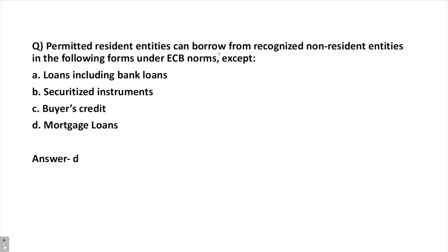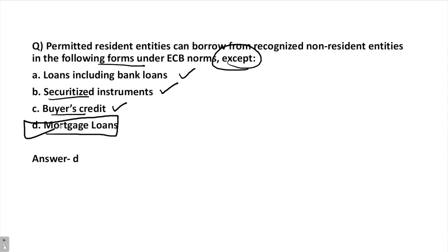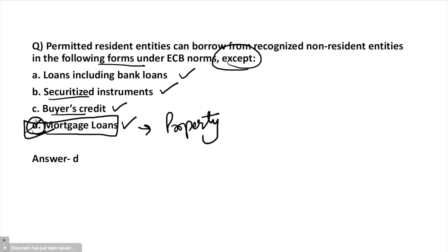Next question: Permitted resident entities can now borrow from recognized non-resident entities in the following forms, except — You can borrow as a loan, through securitized instruments, or through buyer's credit. Can you borrow through mortgage loans? Mortgage loans involve putting up land, a house, or property as collateral to borrow from an external entity. This is not permitted except in the case of affordable housing. Therefore, mortgage loans are the incorrect answer here.